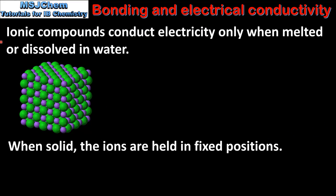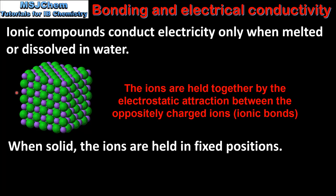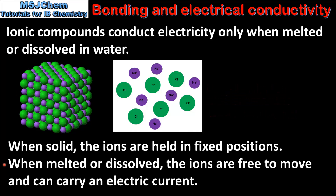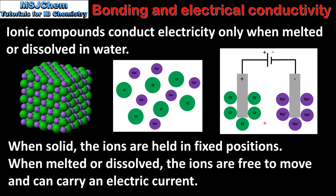Next we look at ionic compounds. Ionic compounds conduct electricity only when melted or dissolved in water. When solid, the ions are held in fixed positions in a lattice structure, so ionic compounds do not conduct electricity when solid. When melted or dissolved, the ions are free to move and can carry an electric current. The ions are attracted to oppositely charged electrodes, which is one of the ways current is conducted in an electrolytic cell.